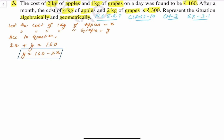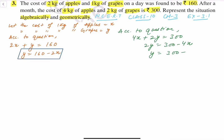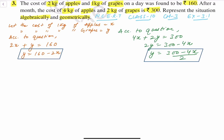Now, हमने इसका table बनाना है, but we'll make it later on. According to the question, हमारे पास 4 kg of apples हैं, so that will be 4x. And 2 kg grapes हैं, so that will be 2y. Cost दी है 300. So, 2y is equals to 300 minus 4x. Solving for y: y is equals to 300 minus 4x divided by 2. This is our second equation.